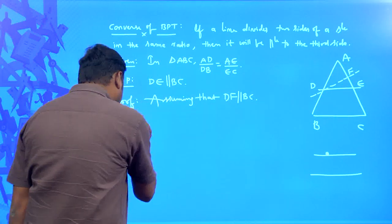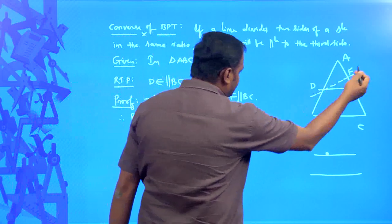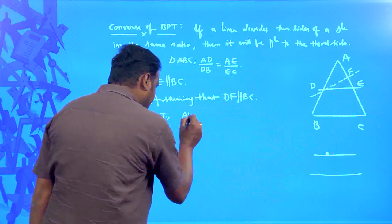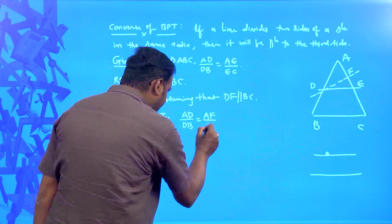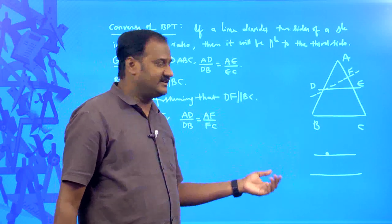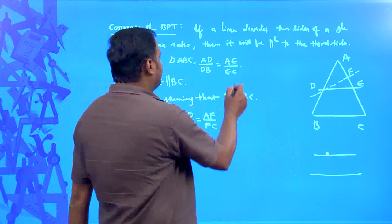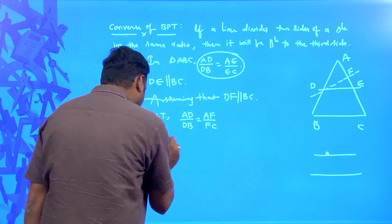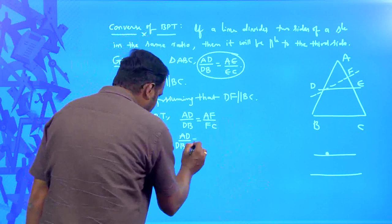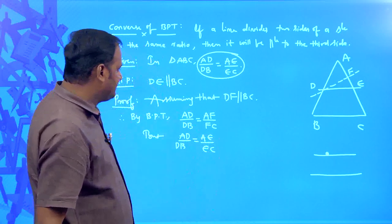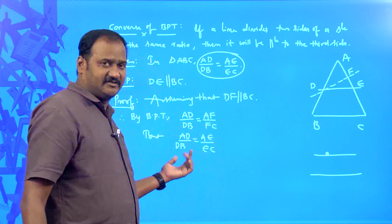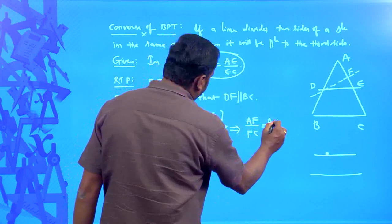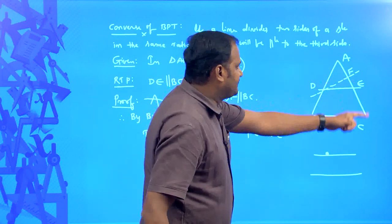Therefore, by basic proportionality theorem, since DF is parallel to BC, we can say AD by DB is equal to AF by FC. But remember, the information given in the statement is that AD by DB is equal to AE by EC. Since both left-hand sides are equal — AD by DB equals AD by DB — we can equate the right-hand sides. When we equate them, we get AF by FC is equal to AE by EC.